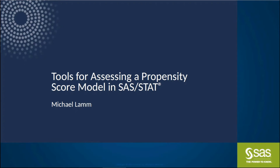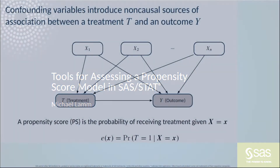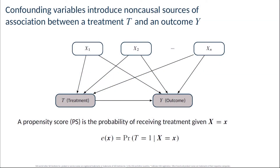Let's start with a quick review of what a propensity score is and the role it plays in analyzing observational data. Unlike data from a fully randomized experiment, observational data are likely to include confounding variables that have causal relationships with both the treatment and outcome of interest. These confounding variables introduce non-causal sources of association between the treatment and outcome, which, if unaccounted for during the analysis, can bias many traditional approaches to effect estimation.